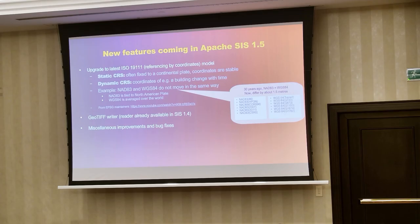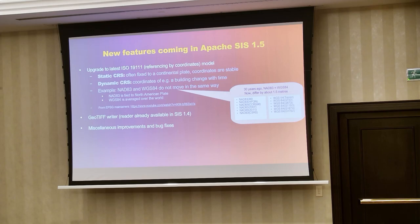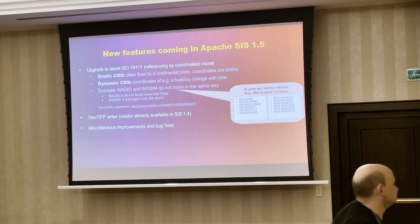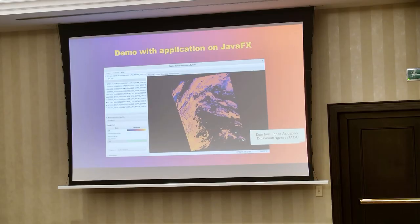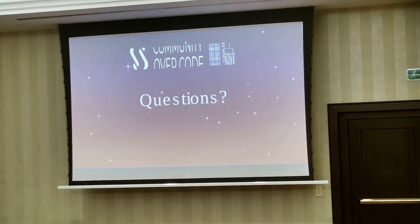Work currently ongoing in Apache SIS includes upgrading to new standards that account for the fact that the Earth is moving. For example, after the earthquake in Japan, some parts of Japan moved by seven meters. Even without such dramatic events, things like sea level change every day with the tides, and measuring positions relative to sea level requires a dynamic coordinate reference system. Dynamic coordinate reference systems are a new feature in recent standards that we are currently implementing in Apache SIS. This is a screenshot of the demo I wanted to show. Thank you.